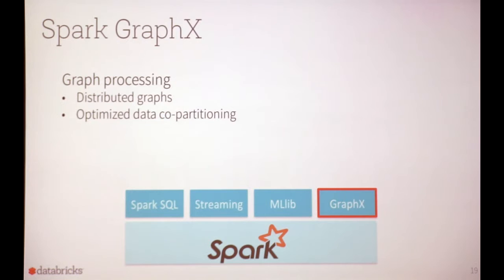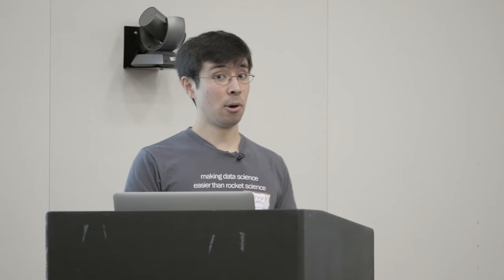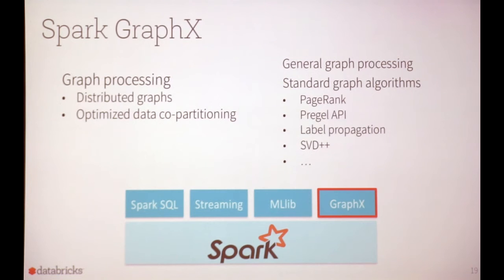The final library is GraphX for graph processing, built on the same RDD API. It supports distributed graphs with important optimizations such as data co-partitioning. For users, this allows both very complex general graph processing as well as standard graph algorithms like PageRank, the Pregel API, label propagation, and so on.